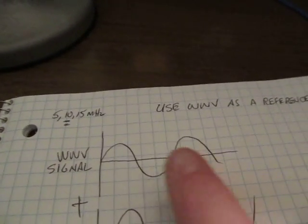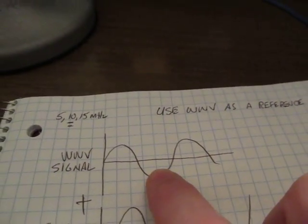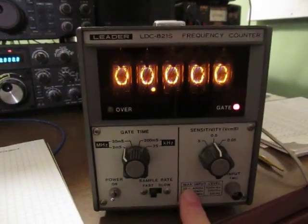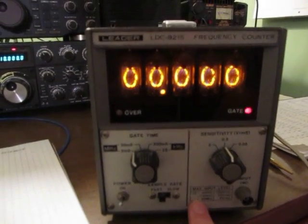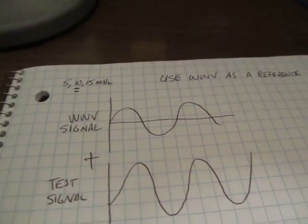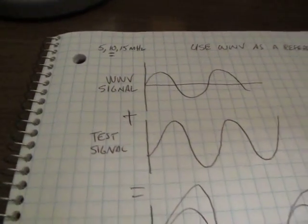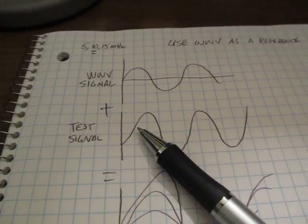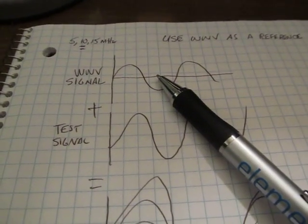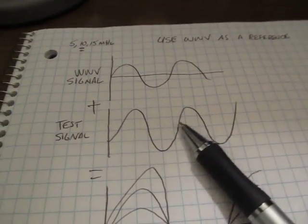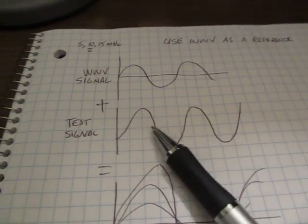What we're going to do is basically compare the WWV carrier signal to our test signal, whatever it might be — it might be from a signal generator. In our case here, we're going to be looking at the reference output of this old Leader frequency counter, which happens to use a 10 MHz reference. The trick is how do we compare the two? The principle we're going to use is just beating them together, something called zero beat — pretty common to amateur radio operators.